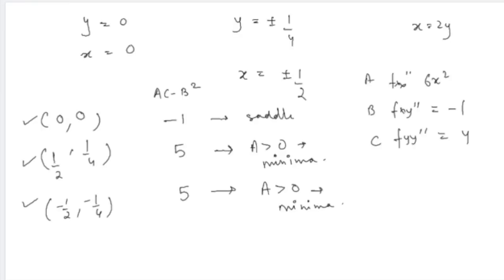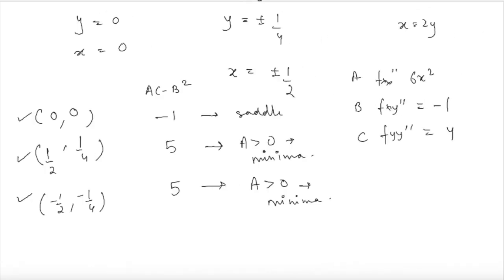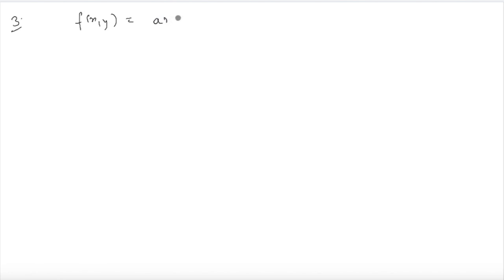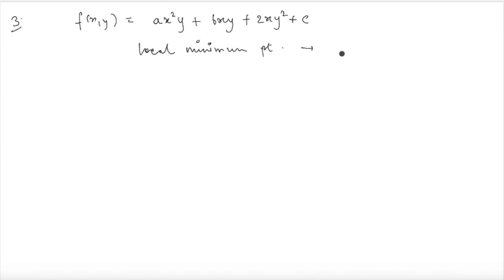This is the broad outline of the steps to follow for local extreme points. Now taking question number 3, which is also on local extreme point conditions but with a different approach. You are given f(x, y) = ax²y + bxy + 2xy² + c. It is already stated that this function's local minimum occurs at (2/3, 1/3), and the local minimum value is -1/9. In part 1, you must find the values of constants a, b, and c.